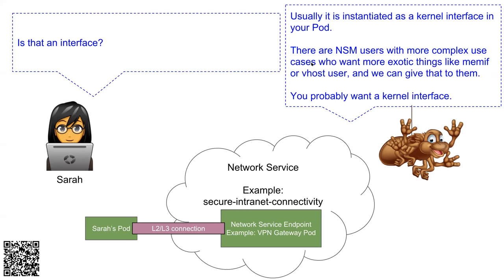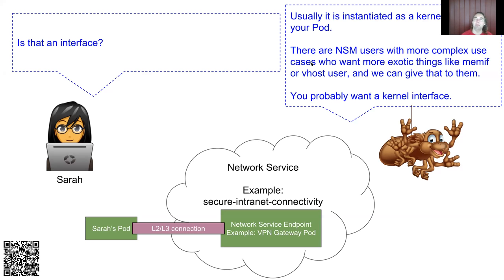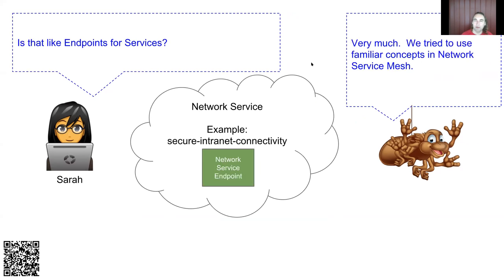Q: In the example, where is Sarah located? What are the possible deployment locations? NSM itself is not providing the VPN gateway pod — the VPN gateway pod is a network service, and NSM connects network services rather than providing them. The VPN gateway pod would probably run on the same cluster as Sarah's pod, then have a connection back to some VPN concentrator — something like IPsec back to a VPN concentrator on your corporate site.